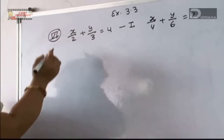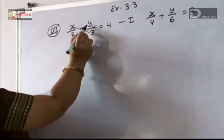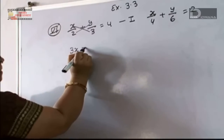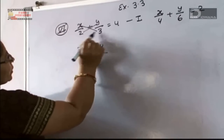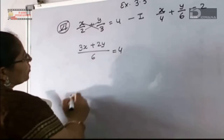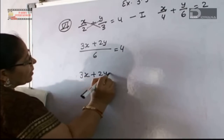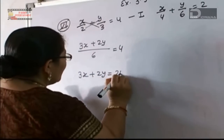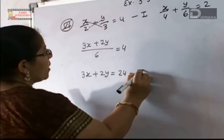Now we are first to find the value of x and y. So we will do the cross multiplication. This gives 3x plus 2y upon 6 upon 4, so 3x plus 2y equal to 6 times 4, which is 24. This is equation number 1.